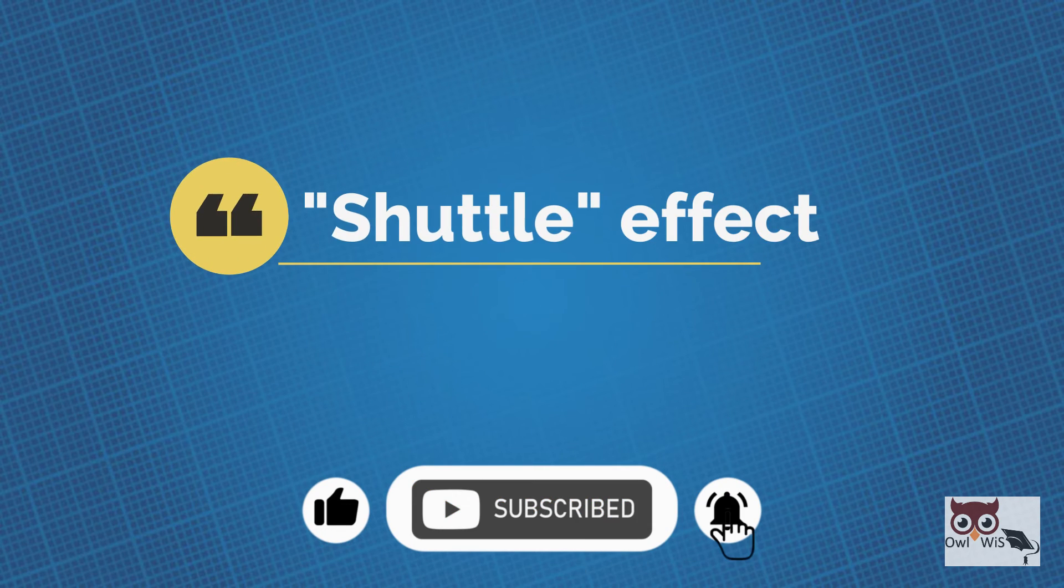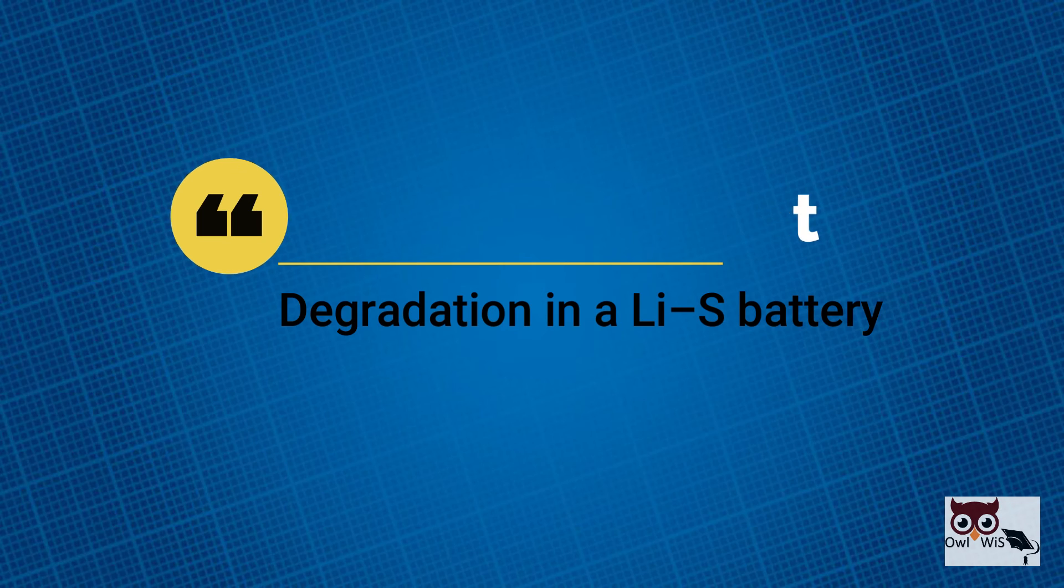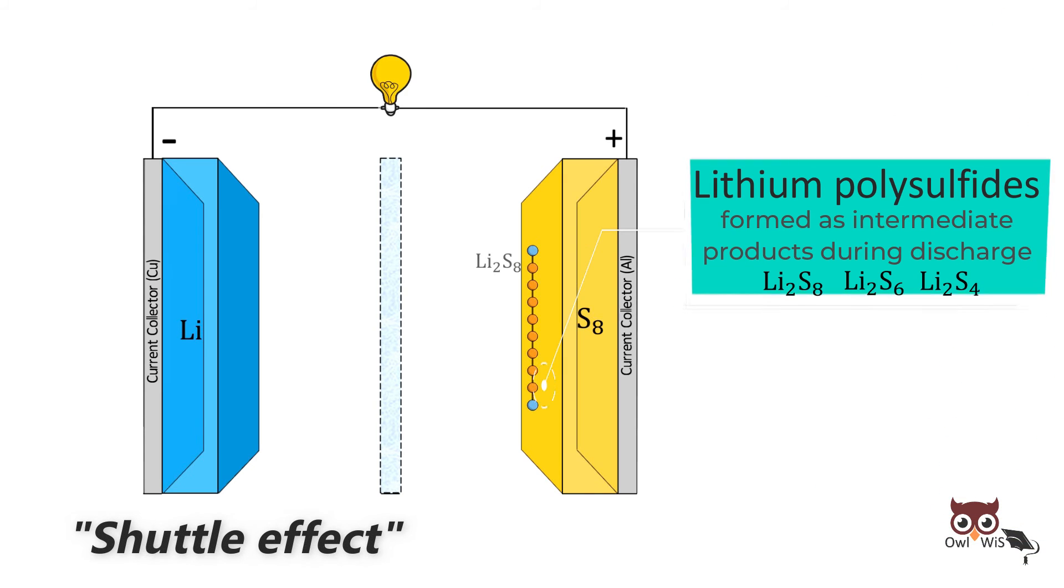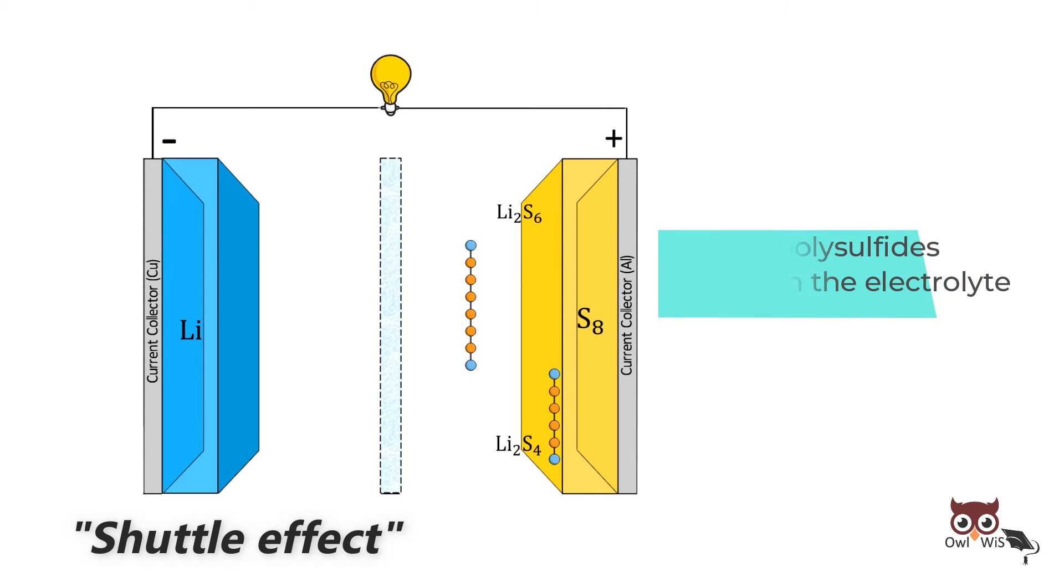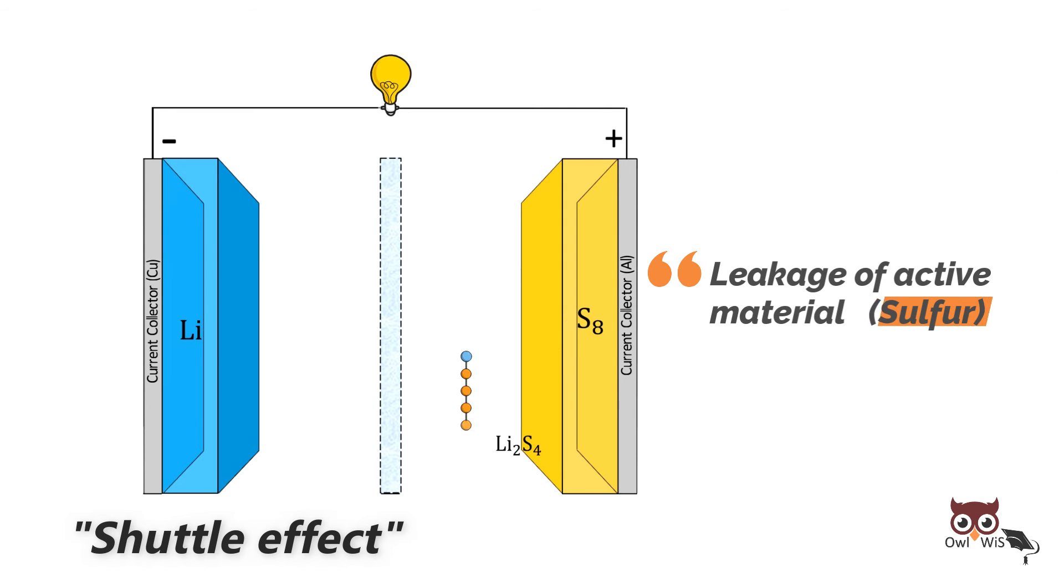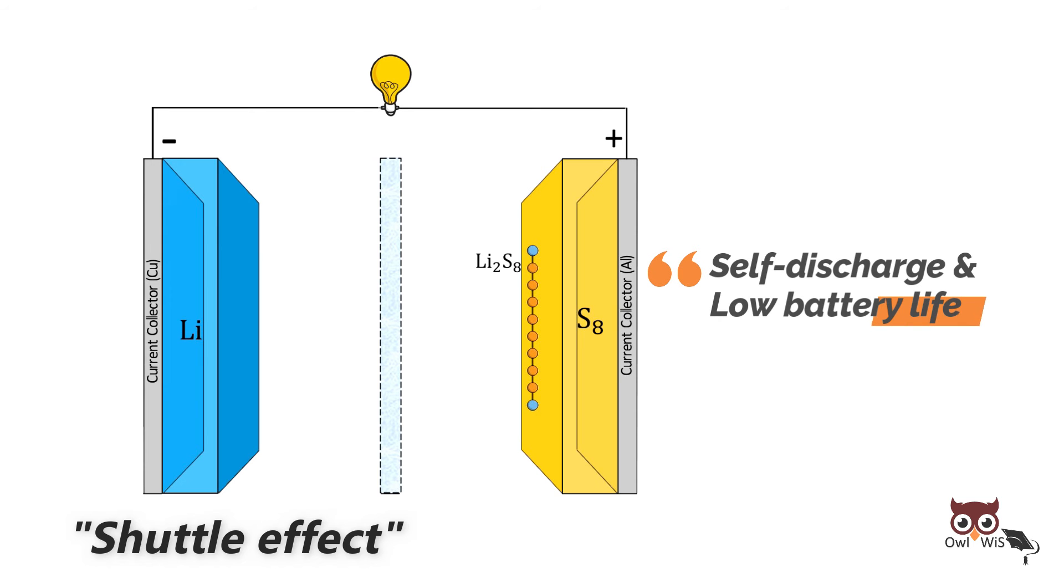The shuttle effect is the main cause of degradation in a lithium sulfur battery. The lithium polysulfides formed as intermediate product are highly soluble in the electrolyte. This results in the leakage of active material from the cathode, cell discharge and low battery life.